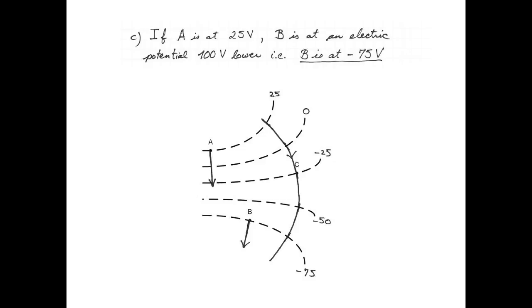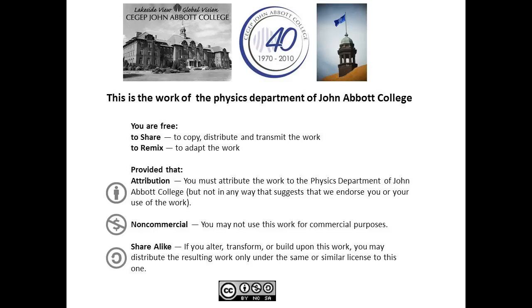And I can go back to my initial diagram and relabel the equipotential surfaces. A on the 25 volt line, and because there are four lines after that, the next line would be 0, and then minus 25, minus 50, and B is on the negative 75 volt line. Spread the joy of physics!